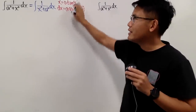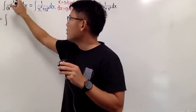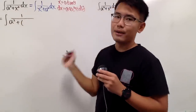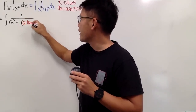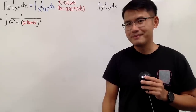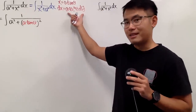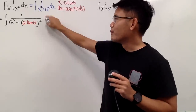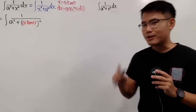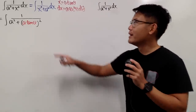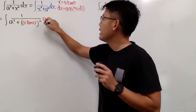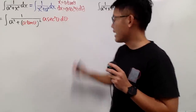Now we just need to put everything into this form. So this is going to be the integral of 1 over a squared plus, and we put down a times tangent theta, and then we square that. The dx right here has to be written in terms of theta and d theta. A lot of students just don't put down the dx or d theta, and that's a horrible mistake — it's like driving without a seatbelt. So remember to write down the dx or d theta. We have a times secant squared theta, d theta.